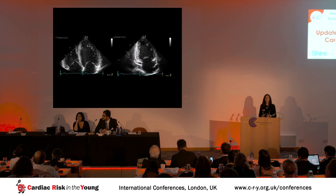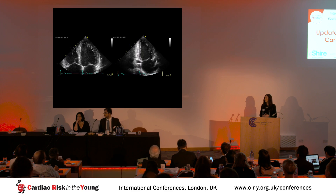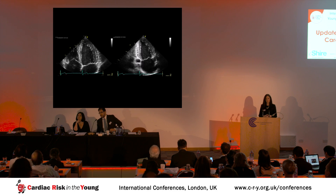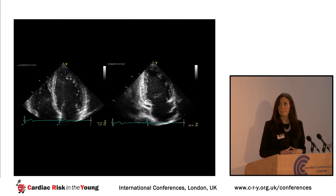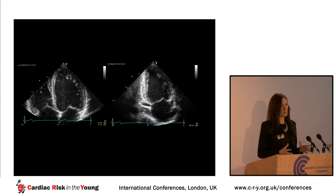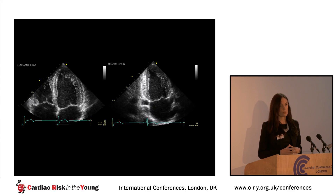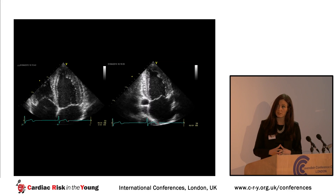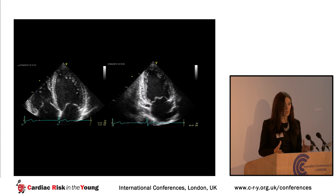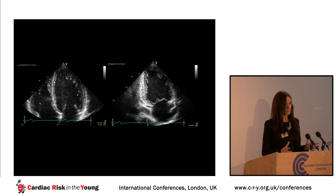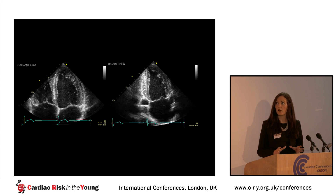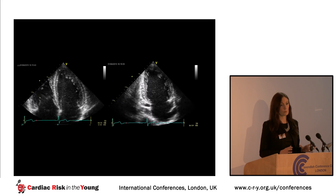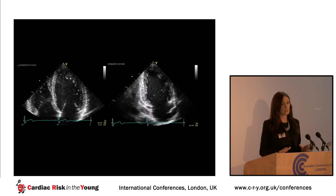This echocardiogram is of a 31-year-old triathlete. You can see there's marked dilatation of all four chambers, but particularly the left ventricle, and there's marked sinus bradycardia. You wouldn't be faulted for thinking, when you first look at this, that this could be a cardiomyopathic process. However, we know that this person does not, in fact, have any pathology — this is purely physiological adaptation.